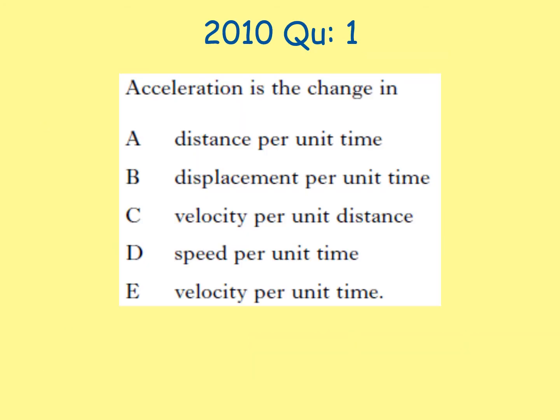2010 Question 1. This question is asking us for a definition of acceleration. If we write down our equation for acceleration, it looks like a = (v - u) / t. From this, we know acceleration is the change in velocity per unit time. So our answer here is going to be E: the change in velocity per unit time.